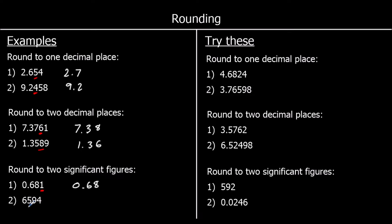And 6,594: the first significant figure is 6,000, the second one is 500. So let's look at the next one — if it's 5 or above, round up. So we're rounding up, so it's 6,600. Okay, and again some for you to try — so give these ones a go.